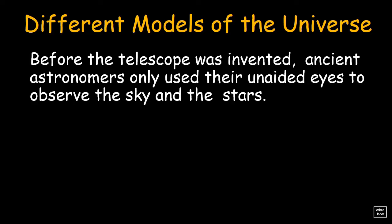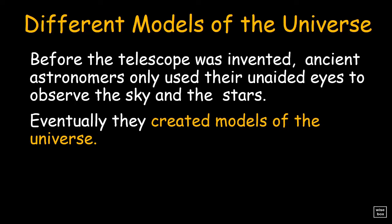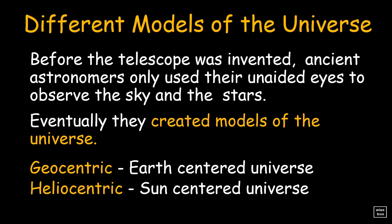Before the telescope was invented, ancient astronomers only used their unaided eyes to observe the sky and the stars. Eventually, they created models of the universe. Geocentric, meaning Earth-centered, and heliocentric, which means Sun-centered.